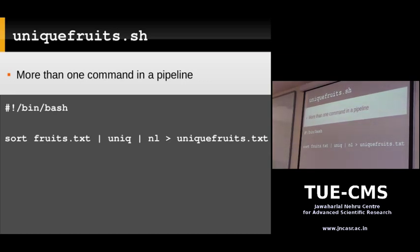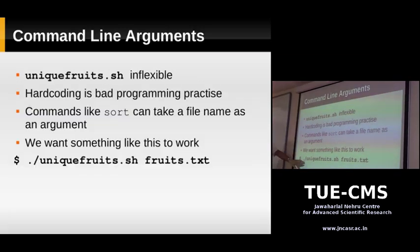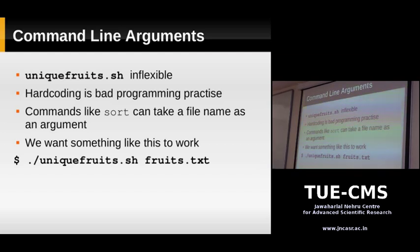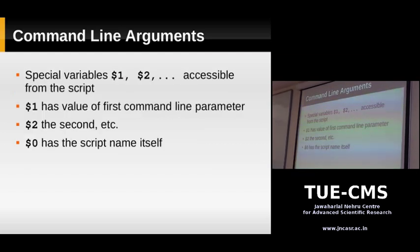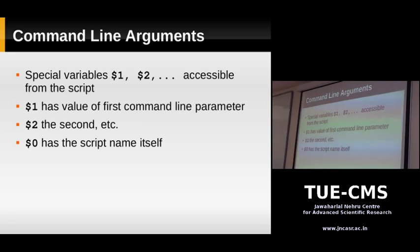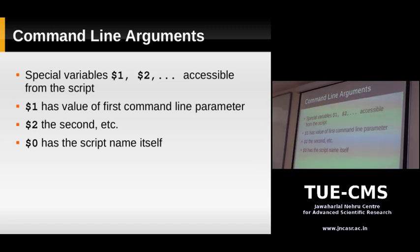We want to modify our script so it accepts a command line argument — so we can type unique_fruits.sh and specify any filename. Inside a script there are special variables: $1, $2, $3 and so on. $1 contains the first command line argument, $2 the second, $3 the third. If you have n command line arguments, you'll have up to $n.